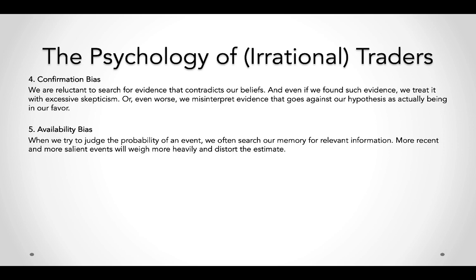Availability bias: when judging the probability of an event, we search our memory for relevant information. Whatever we remember more quickly — usually recent or more salient events — gets more weight and obviously distorts our estimates.